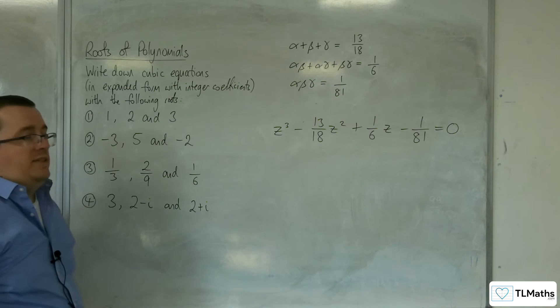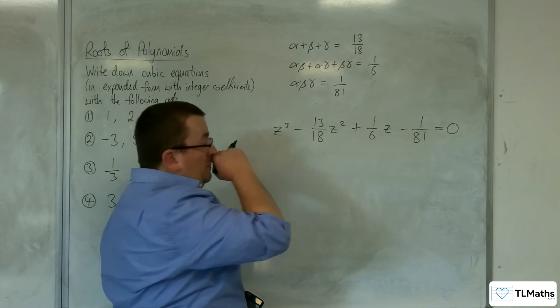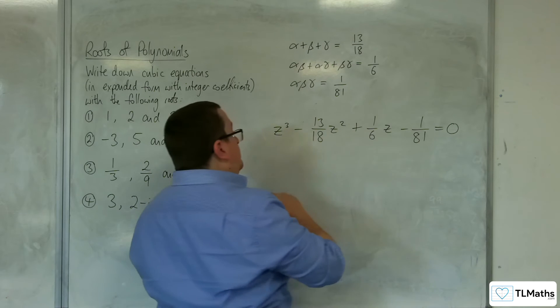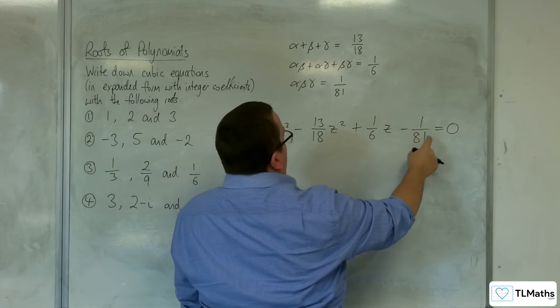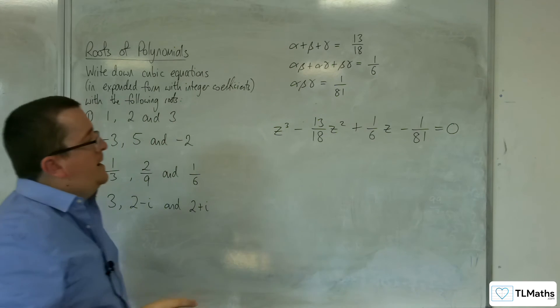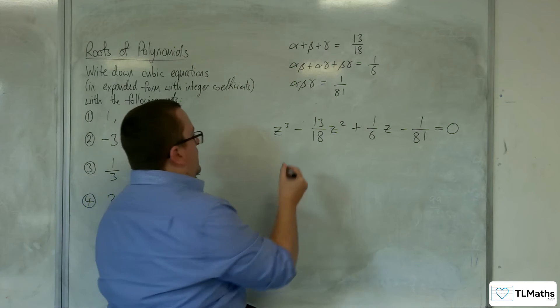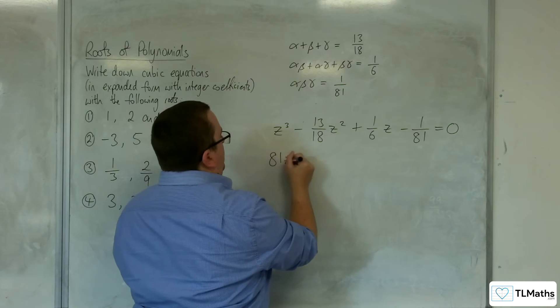Now, we need this to have integer coefficients. So, in doing that, we need to get this integer coefficient. So, if we multiply everything through by 81, to start off with, then we're going to get 81 z cubed.